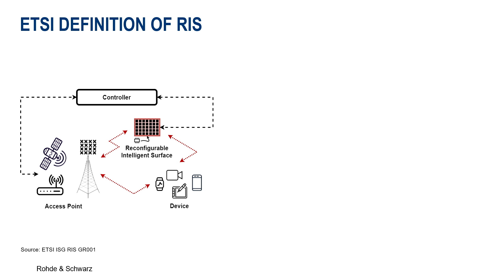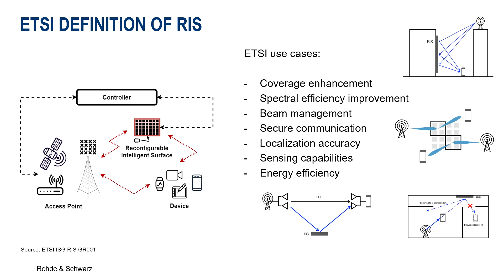For instance, ETSI just recently released a general definition for RIS and lists the most interesting use cases. According to this definition, RIS will be part of the radio network in the future, controlled in order to adapt the radio channel to current needs from the device's or receiver's perspective. Thus, it will allow coverage extension, for instance by overcoming or getting around obstacles, and will support certain MIMO-capable multipath channels or beamforming algorithms.